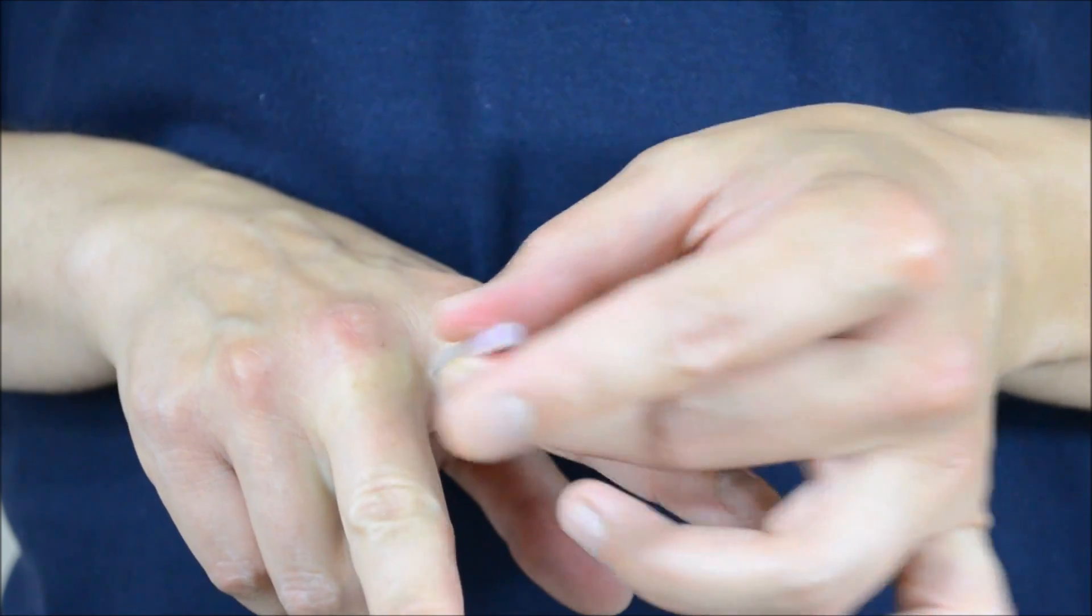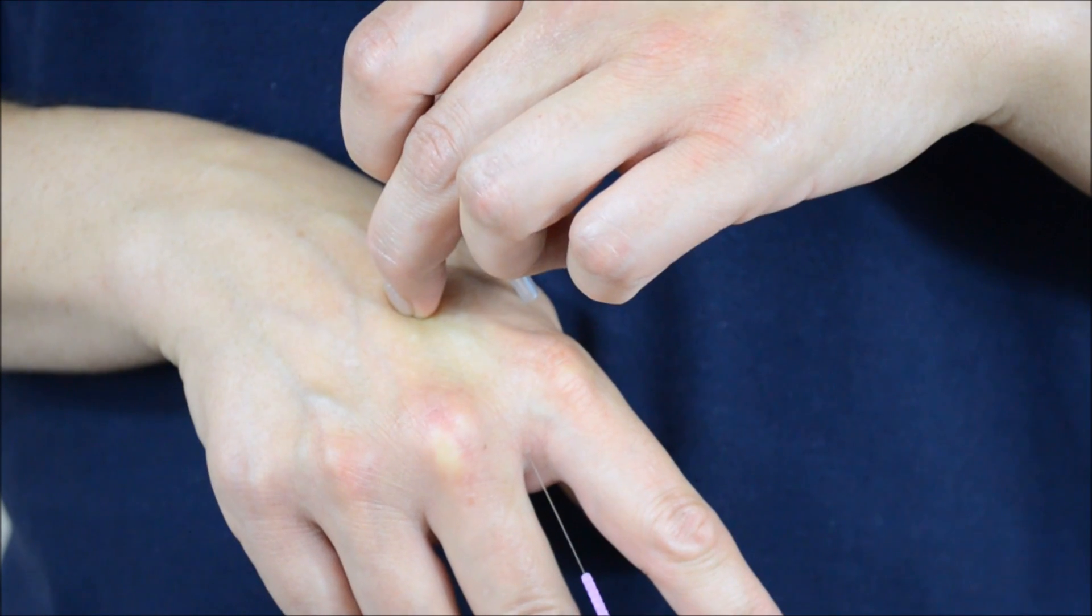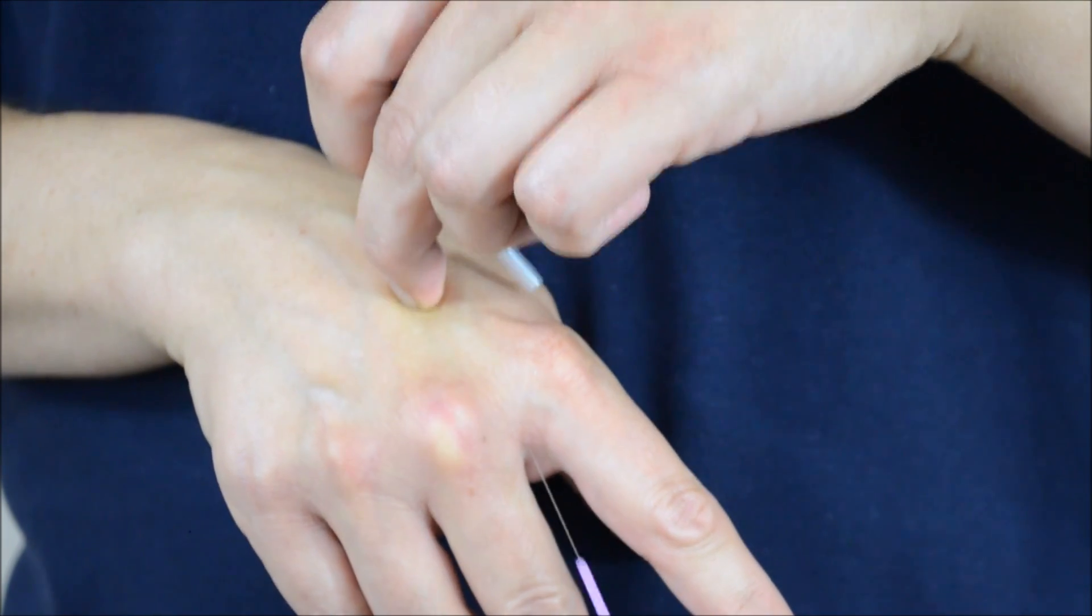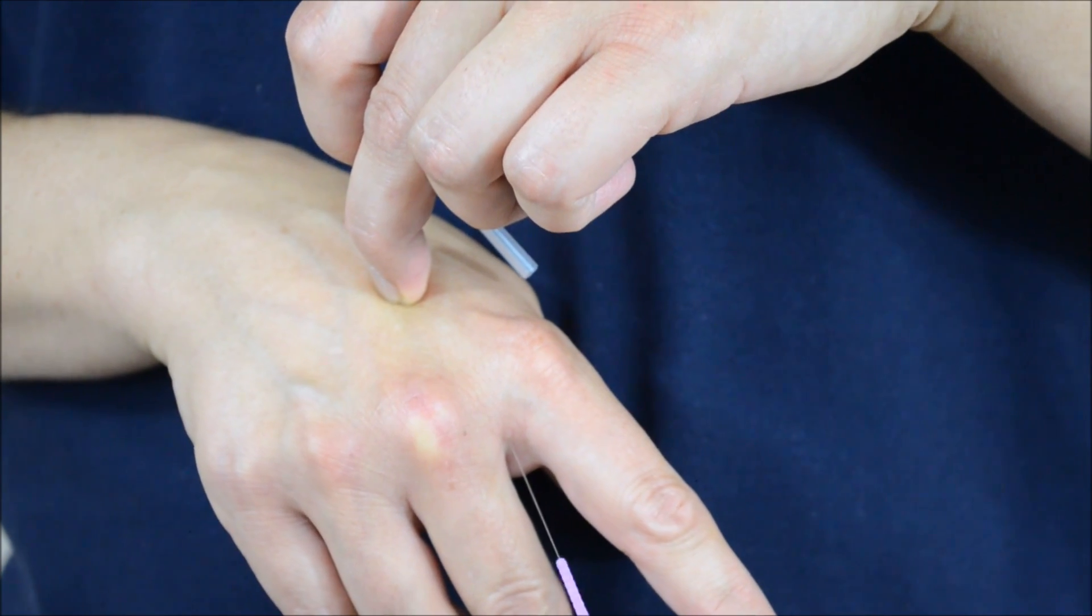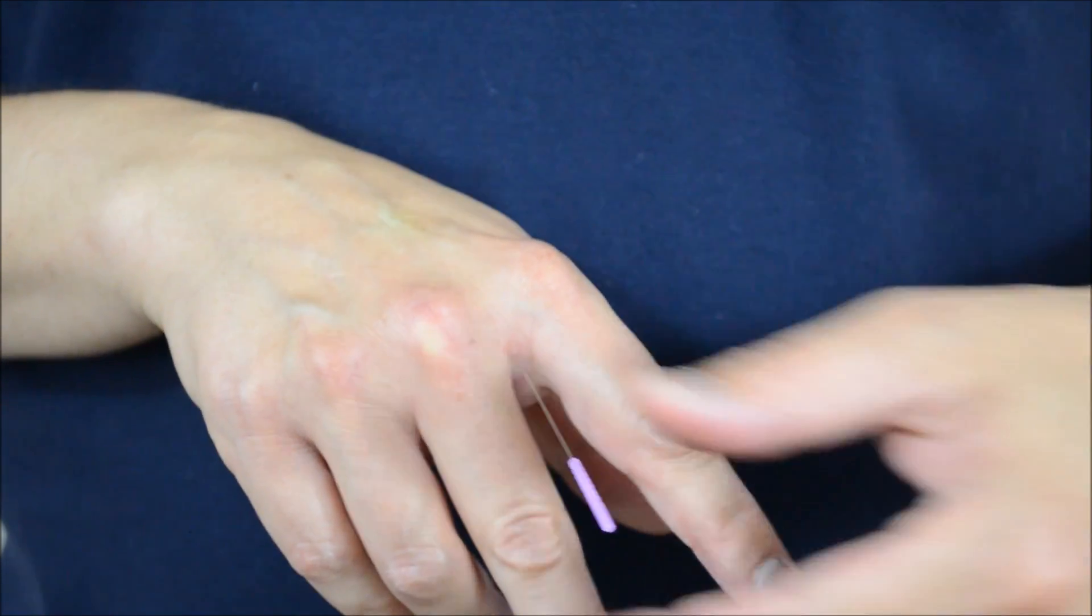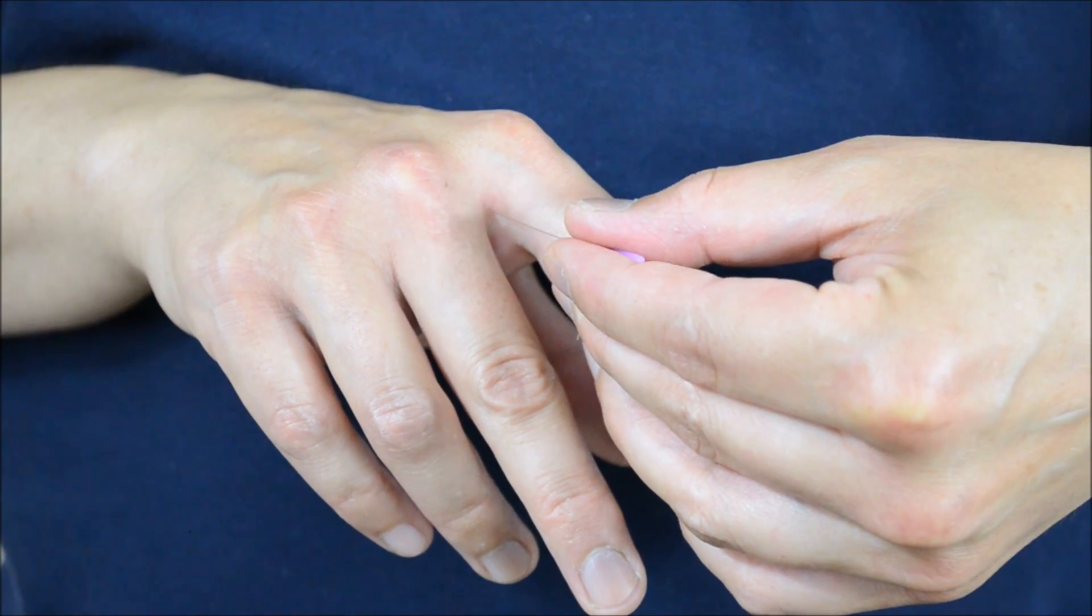And what you want to do is angle the needle in the space between the metacarpals. So if you need to mark that with your fingernail or keep another finger on that area so that you know where it is, that's pretty helpful. And that way, when you insert the needle, you insert it towards that target.